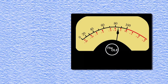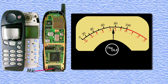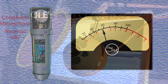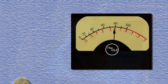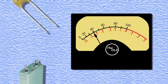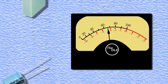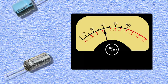Condenser microphones are very popular and are used in everything from cell phones to recording studios. Due to their design, they are more sensitive and deliver a different type of sound texture from dynamic microphones. Condenser is another word for capacitor, and that is what a condenser microphone is — a variable capacitor.